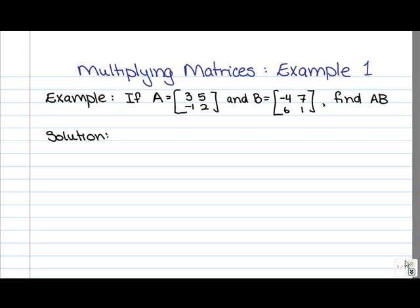Specifically, in this example, you're asked to multiply the two matrices A, which is [3, 5; -1, 2], and B, which is [-4, 7; 6, 1].